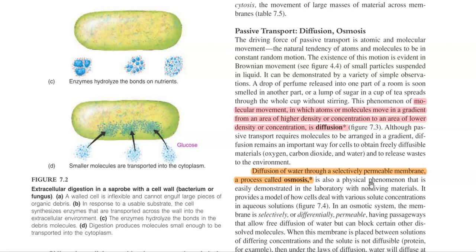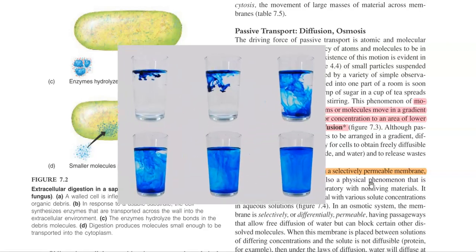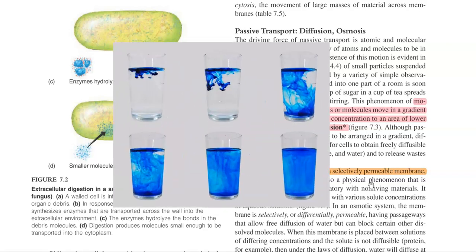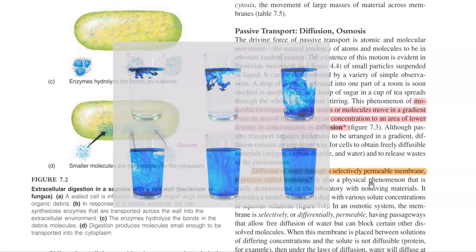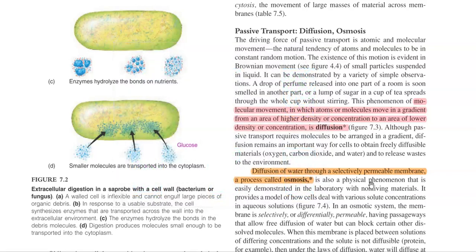This can be very simply demonstrated by pouring a drop of a colored solution into water, or a drop of perfume released in one part of a room can spread into the entire room. This is a simple demonstration of diffusion — the random movement of atoms or molecules, also referred to as Brownian movement.